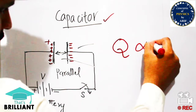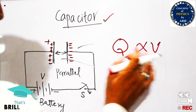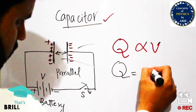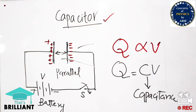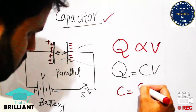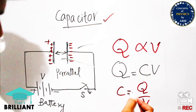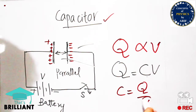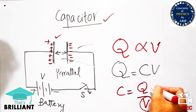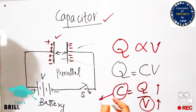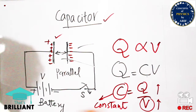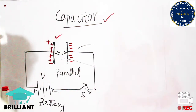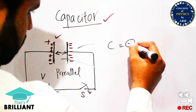If we increase the voltage applied, it will increase the number of charges present on the plate. So Q is directly proportional to voltage V. Removing the proportionality sign introduces the constant C — capacitance — giving Q = CV. Rearranging, C = Q/V, which is a constant value. If we increase the voltage, the number of charges may increase, but the capacitance itself will remain unchanged. Capacitance remains the same whether voltage is increased or decreased.